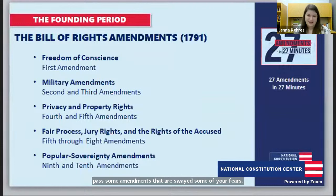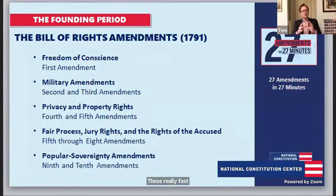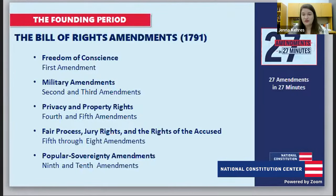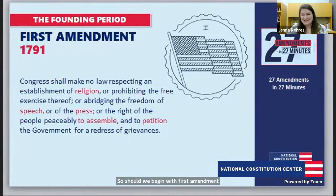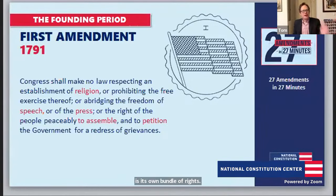We can also break the Bill of Rights into categories — we get these ideas from Akhil Amar, a professor at Yale Law School. Let's begin with the First Amendment: freedom of conscience. There are five freedoms — freedom of religion, speech, press, assembly, and petition. All go to the big idea of freedom of conscience. Religious liberty in the First Amendment is protected two ways: guarding against government establishment of religion, and protecting the free exercise of religion — the right to freely believe or not as we wish.